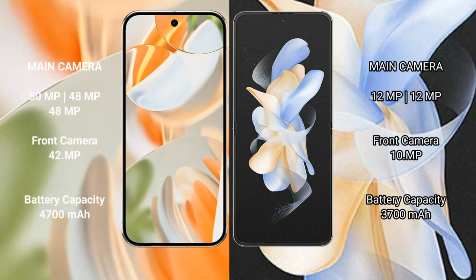Google Pixel 9 Pro rear camera features a triple camera setup: 50MP main, 48MP ultrawide, 48MP telephoto, and a 42MP front camera.